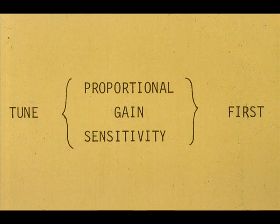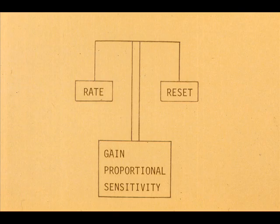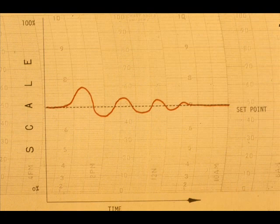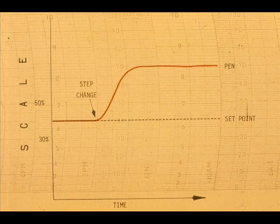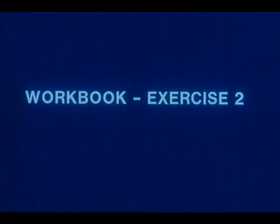Any tuning method must first work with the proportional response, because both reset and rate get their signals from the proportional response. Neither stands alone. When tuning, the reset and or rate are eliminated as much as possible, while the proportional response is first adjusted. We will study methods by which we make the process cycle and methods by which we make a small step change in the process and make a reaction curve. Now work exercise two in your workbook.